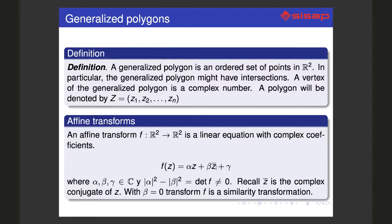For complex numbers we have affine transformations that are mappings from the plane into the plane with complex coefficients. Similarities are just affine transformations where beta equals zero. Affine transformations have three parameters: alpha, beta, and gamma, and the determinant should be different than zero.